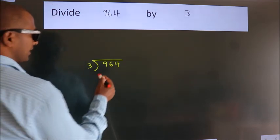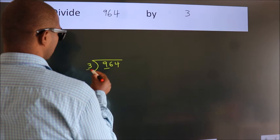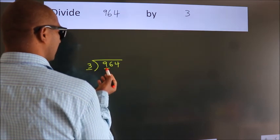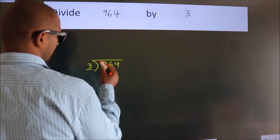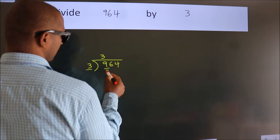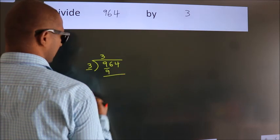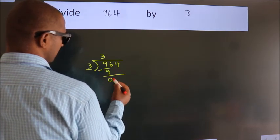Next. Here we have 9, here 3. When do we get 9? In 3 table. 3 3's, 9. Now, we should subtract. We get 0.